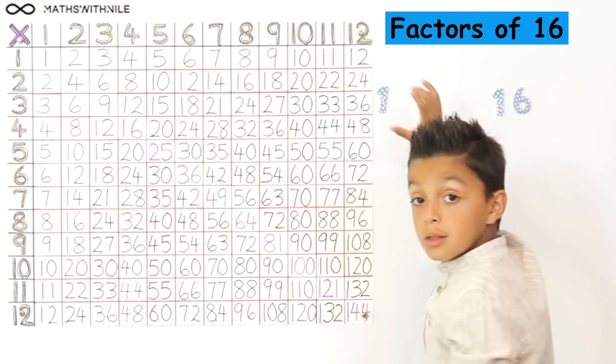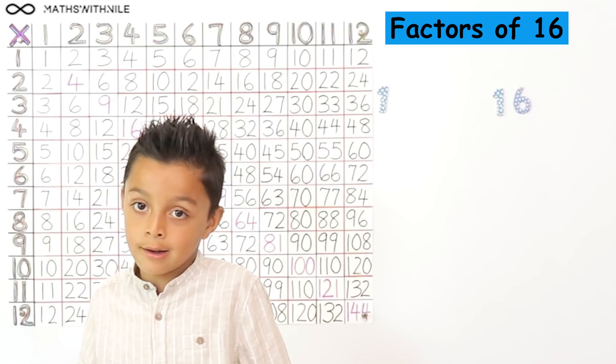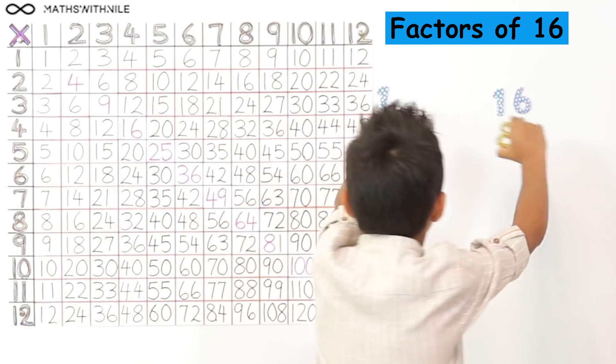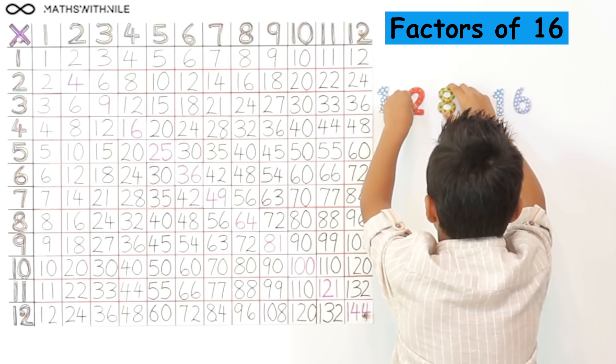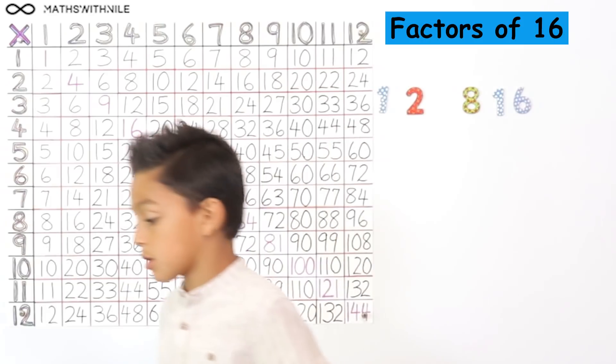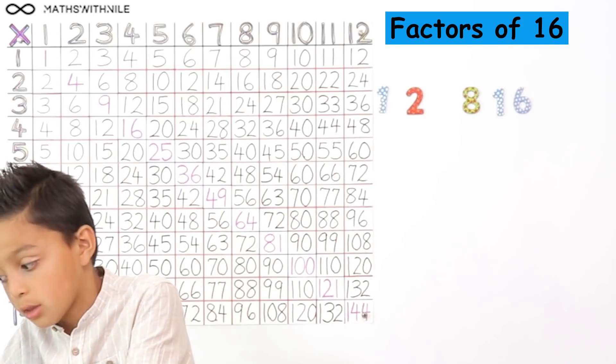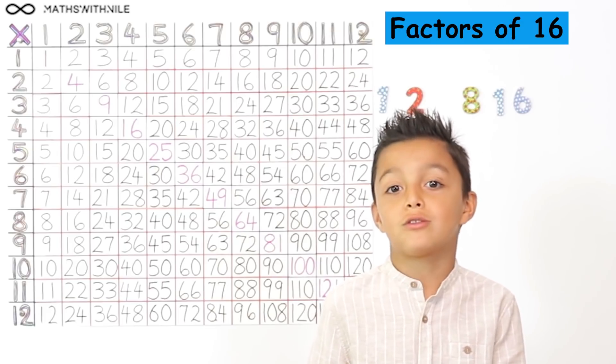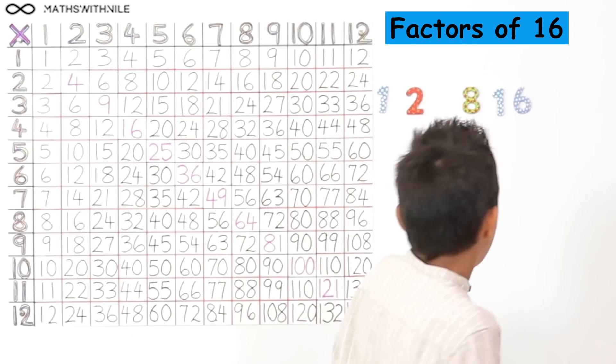2 goes into 16 because 16 is an even number. Okay, very good explanation. 2 times what? 2 times 8. So that means 8 is a factor of 16. 4 is a factor of 16. It goes into 16 four times. Okay. So that means 4 times 4, so we can't put another 4 on there.